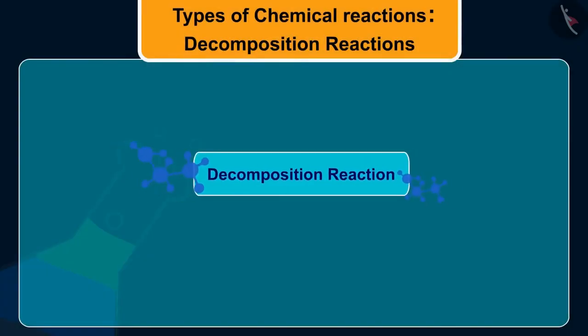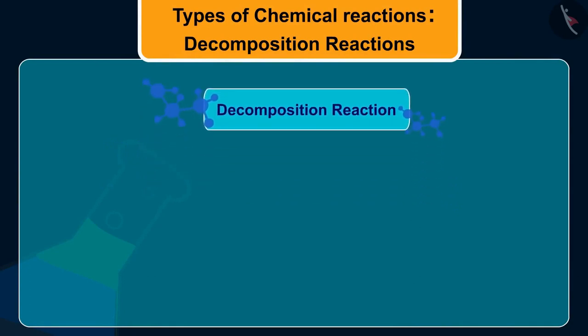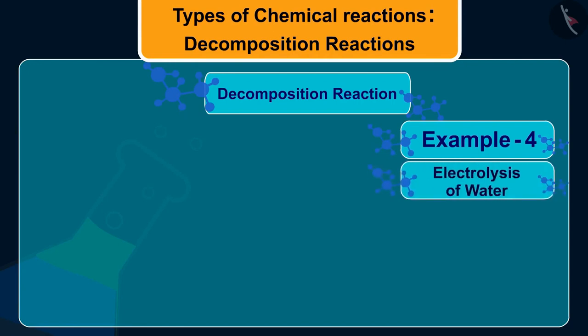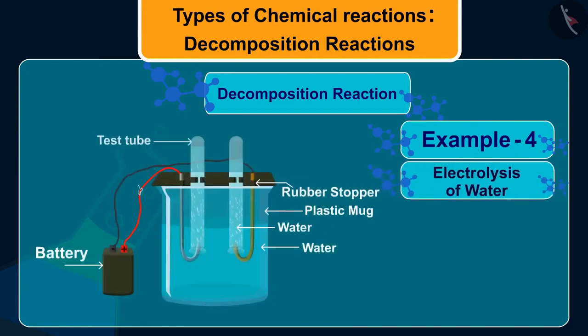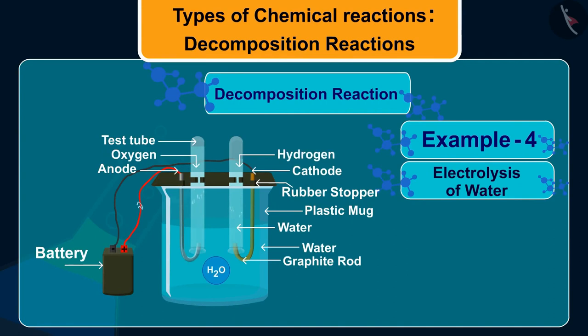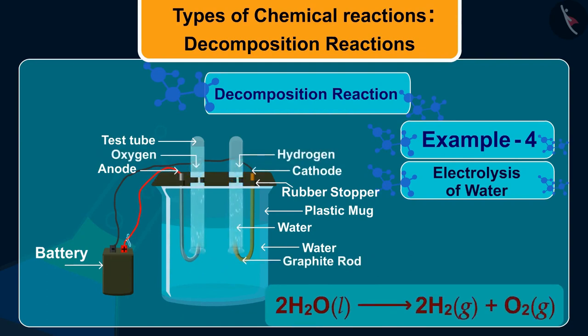Friends, let us discuss an interesting decomposition reaction, which is electrolysis of water. Yes children, water can be broken down into H2 and O2 on passing an electric current through it. The chemical equation for this is 2H2O results in 2H2 plus O2.